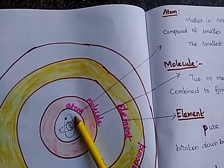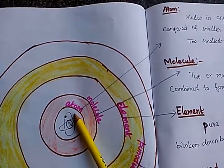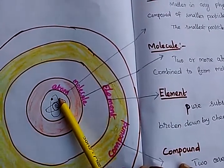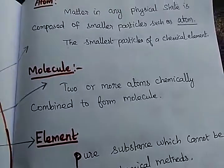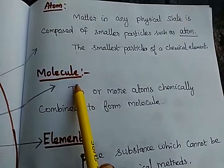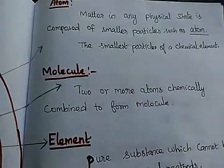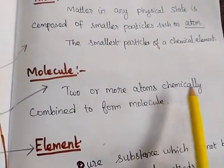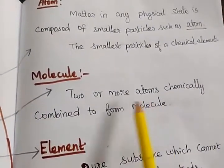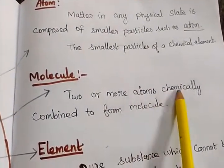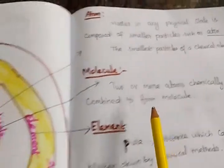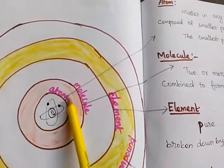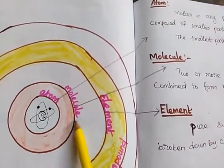An atom is a small particle. What is a molecule? Two or more atoms chemically combine to form a molecule.